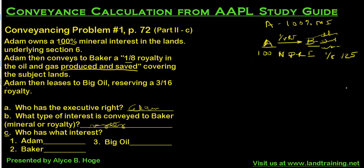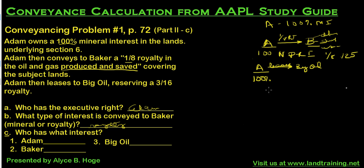The next part says Adam then leases to Big Oil. So Adam takes his 100% and leases it to Big Oil — he doesn't fully convey it, he actually only leases it, giving Big Oil the right to come onto the property. Before Adam leases to Big Oil, if he wanted to drill an oil and gas well, he would have to foot 100% of the bill. Any cost of that well — which can run into the millions — that mineral owner would have to pay. That is called a working interest.